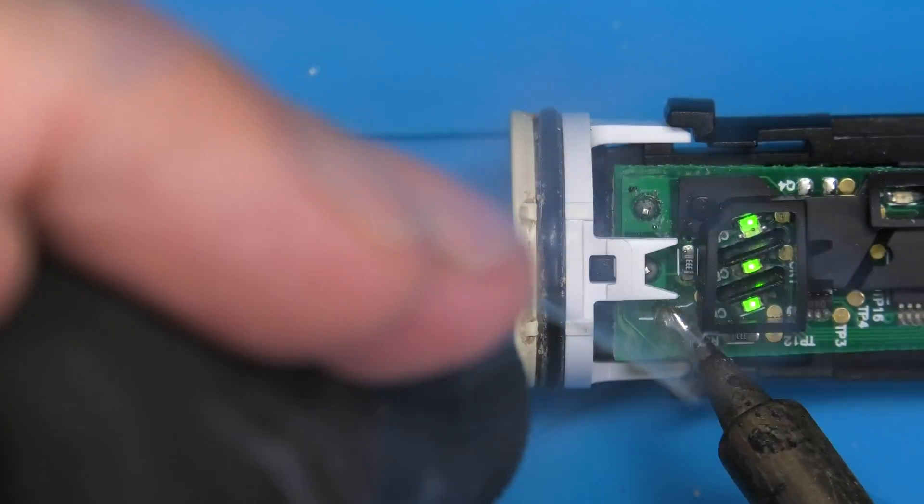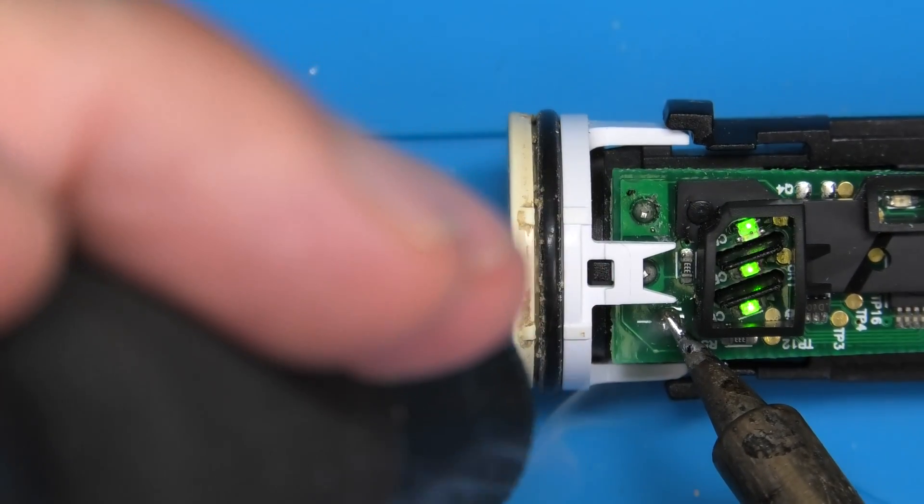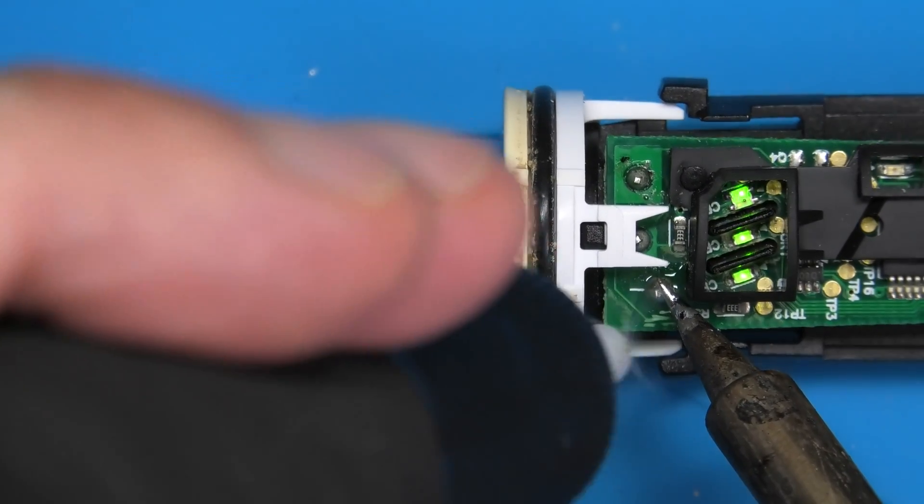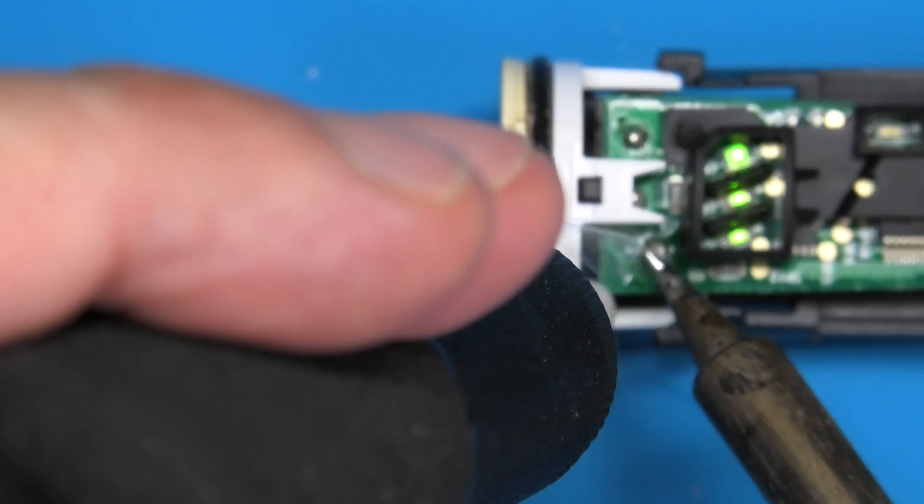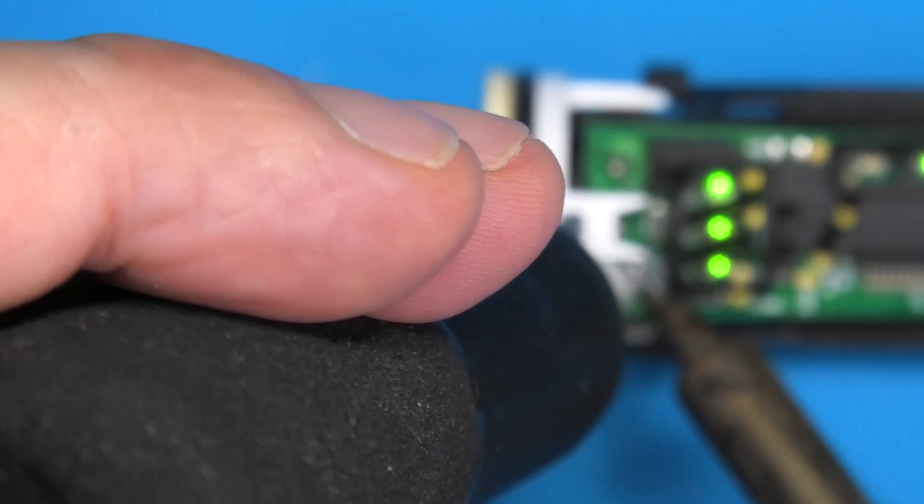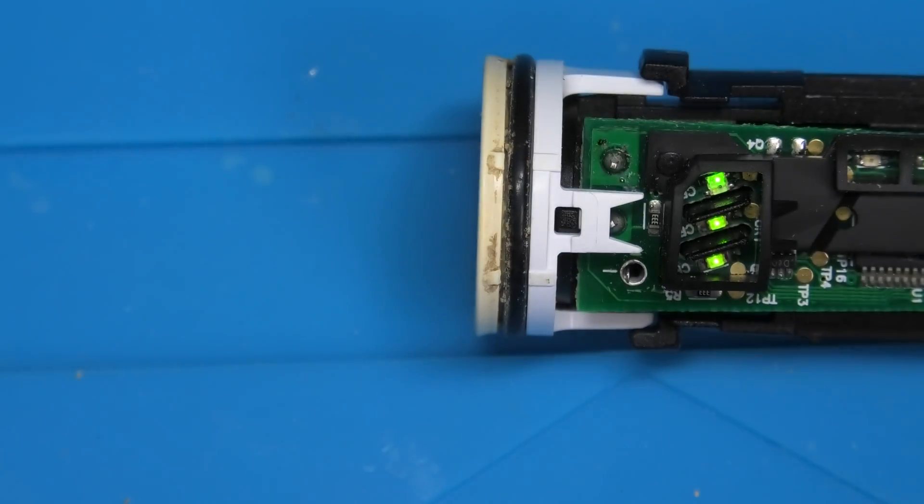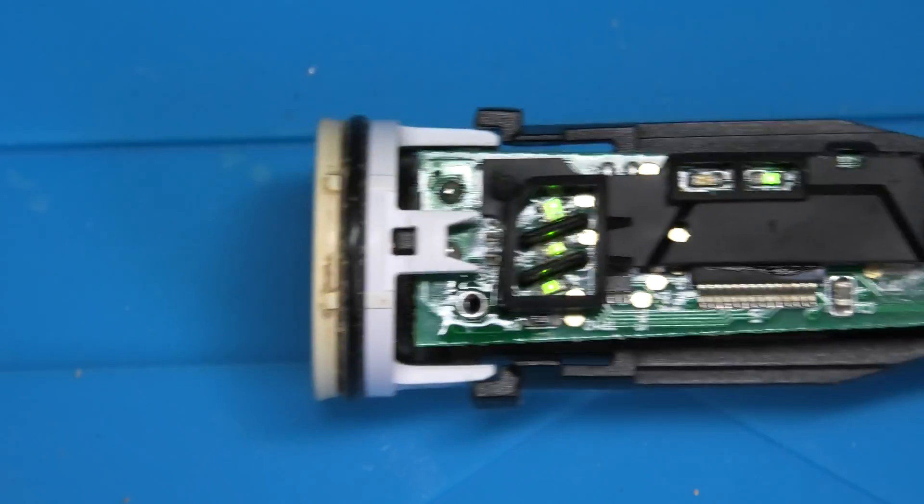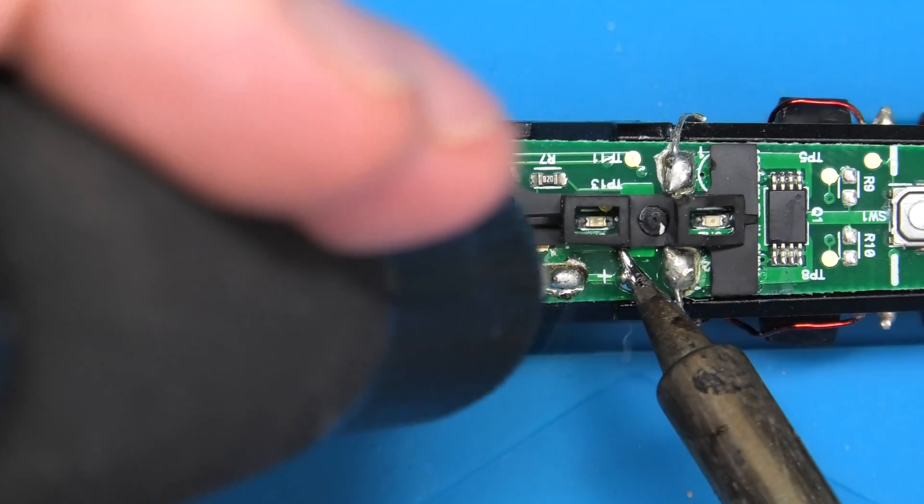We're going to have to desolder the old battery, so I'm just going to use here my soldering iron with this little vacuum pump. I'm going to remove the old solder first on the left side here on the negative pole, and then we're going to repeat this on the right side as well.